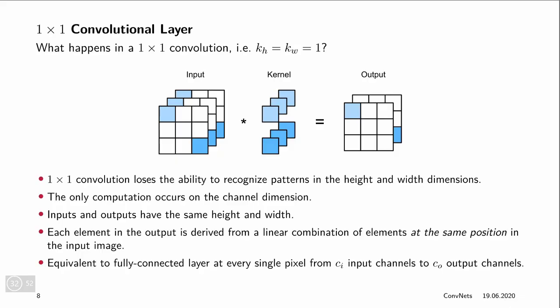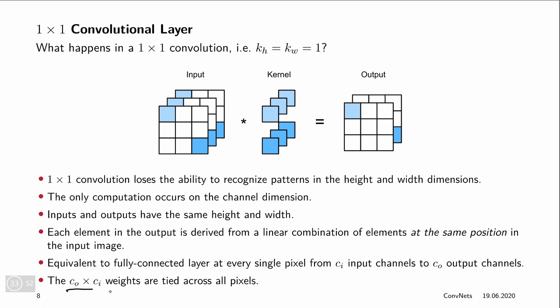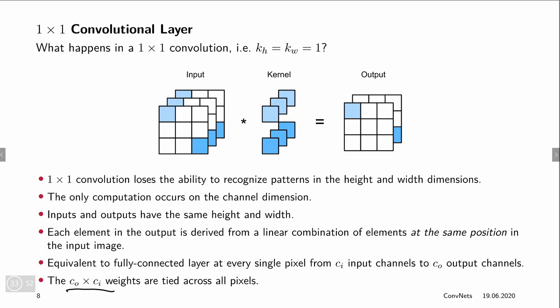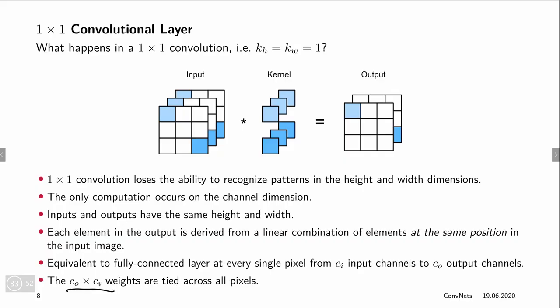Of course, we're still doing a convolution, so we're actually moving this fully connected layer across the whole input. So we're basically applying a fully connected layer to every single pixel of the input to produce CI input channels and CO output channels. So what this one-by-one convolutional layer does is change the number of channels by producing output channels that are linear combinations of the input channels. And because we apply the same kernel to every pixel, the weights of all of these fully connected layers are tied across all the pixels.